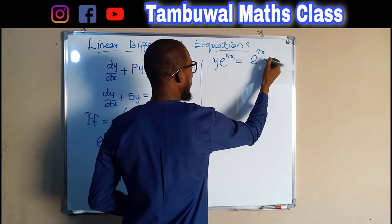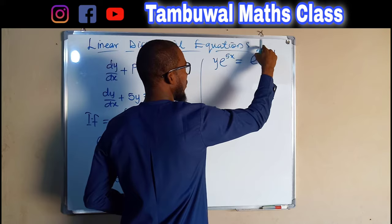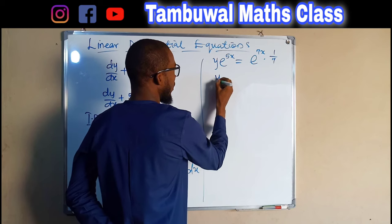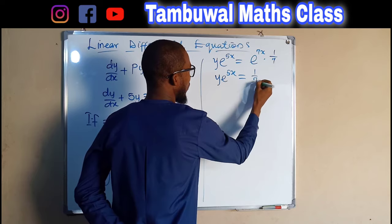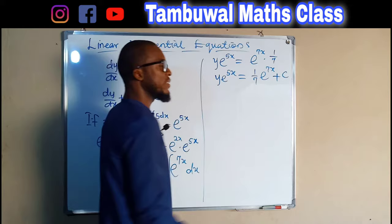Integrating e^(7x) gives e^(7x) multiplied by 1 over the derivative of the power. Differentiating 7x gives 7, so we get (1/7)e^(7x). This gives us: y · e^(5x) = (1/7)e^(7x) + C, where C is the constant of integration.